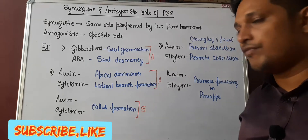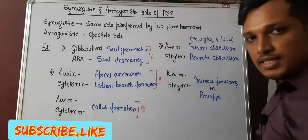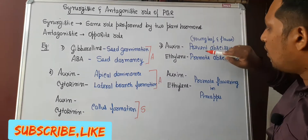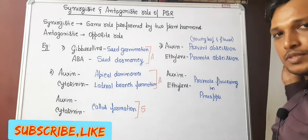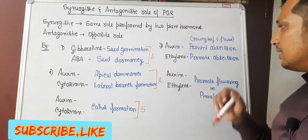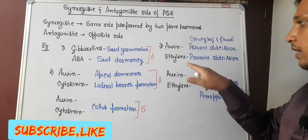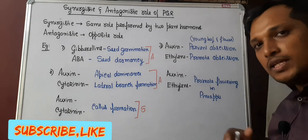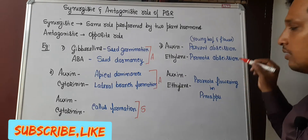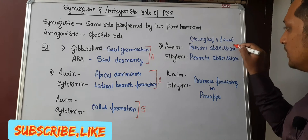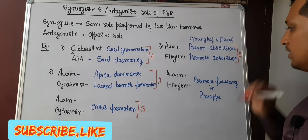Since both have the same function, it is a synergistic function. The next example is auxin and ethylene. Auxin will prevent abscission — abscission refers to the detachment of young leaves and flowers — whereas ethylene promotes the abscission of leaves and flowers. Both play opposite roles, hence it is an antagonistic function.